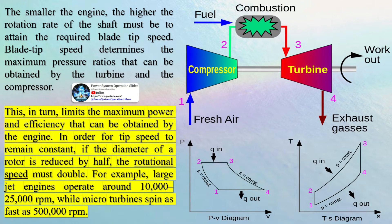For example, large jet engines operate around 10,000 to 25,000 rpm, while micro turbines spin as fast as 500,000 rpm. Mechanically, gas turbines can be considerably less complex than internal combustion piston engines. Simple turbines might have one main moving part — the compressor shaft turbine rotor assembly — with other moving parts in the fuel system, which can translate into lower price.